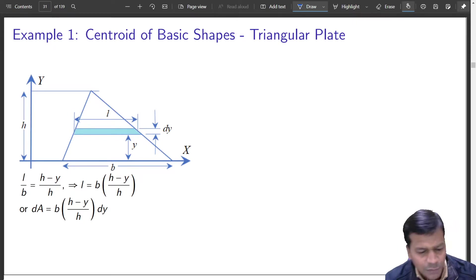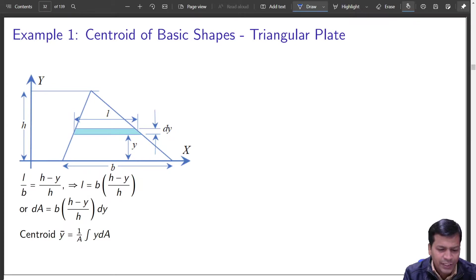So what I get this small length, this length of the elemental strip is equal to B times of h minus y by h. This is quite okay, easily conceivable. So coming to next. Area of this small strip will be dA, that is length into small strip width, width that is dy. So that is area.